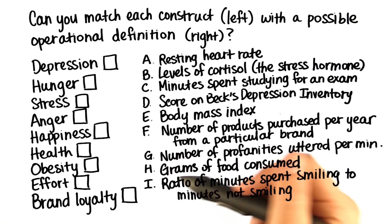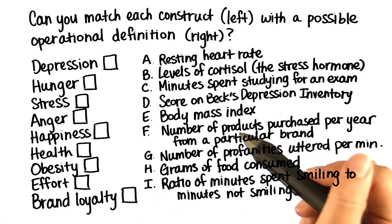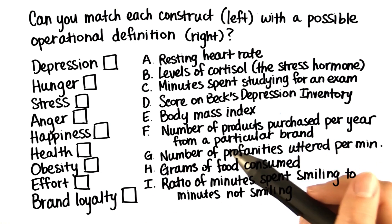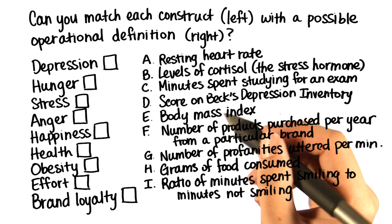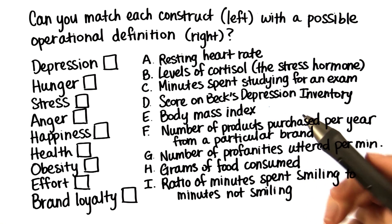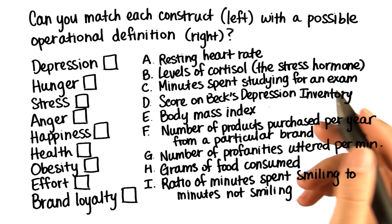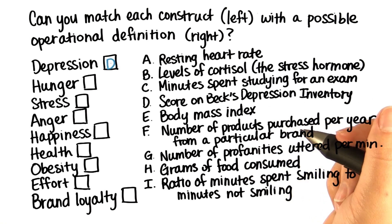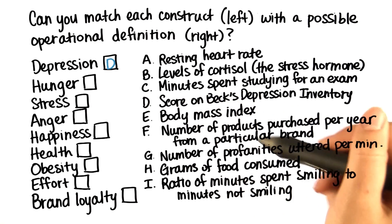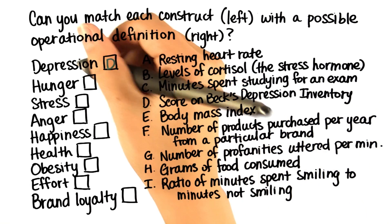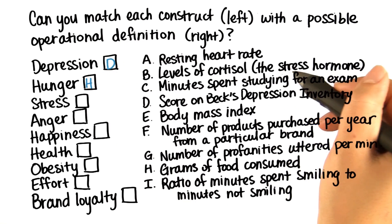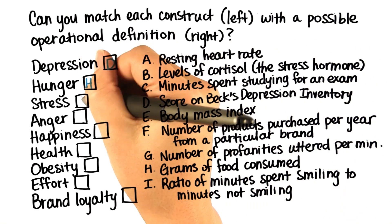Good job trying to match each construct with each operational definition. For depression, someone's score on the Beck's Depression Inventory could be a way of measuring and defining depression. For hunger, grams of food consumed. For stress, levels of cortisol, which is the stress hormone.